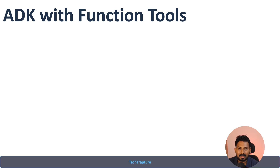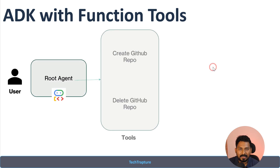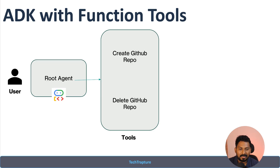In this video we are going to discuss the third type of tool — function tools. Using functions, we can write a piece of code in Python or Java and interact with any third-party system or execute any piece of code. The hands-on use case here involves creating an ADK agent with two tools: one to create a GitHub repo and another to delete a GitHub repo. Based on the user prompt, it will intelligently route to the respective tool.